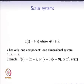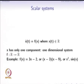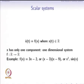Beginning with the topic of scalar systems. Consider the scalar differential equation — what is scalar about it? x-dot(t) is equal to f, where x has only one component and it is a real number. This is also called a one-dimensional system. In such a situation, f is a map from R to R. For example, f equals 3x-2, or f equals (x-3)(x-9), or x squared, or sin(x). These are the examples of f that we will see today.